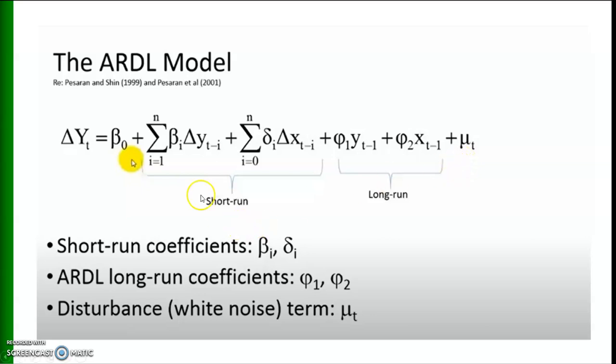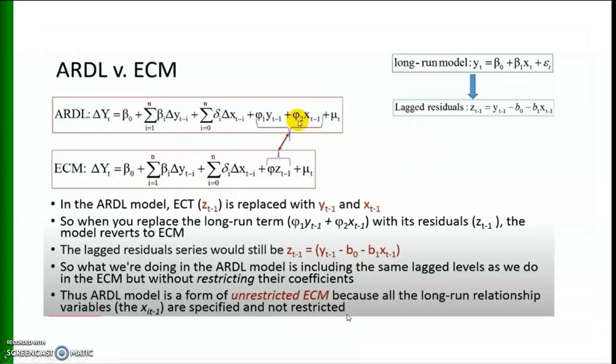The short-run coefficients are the beta_i's and sigma_i's. The long-run coefficients are phi1 and phi2, and mu_t is the disturbance term.